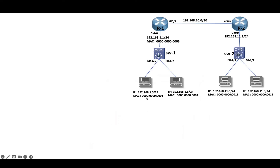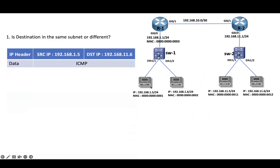Let's say we want to send IP traffic from PC1 to PC2 — for example, a ping. PC1 will check whether the destination is in the same network or a different network using an AND operation. PC1 will do a bitwise comparison between source and destination to identify whether the destination is in the same or a different network.